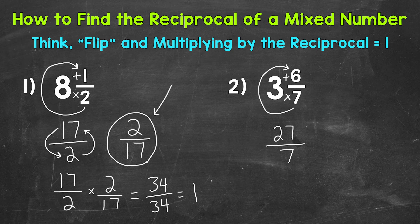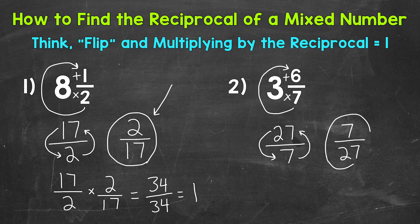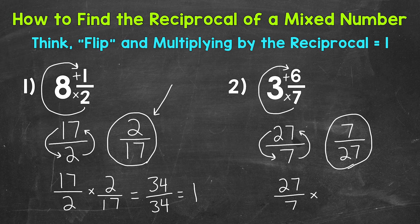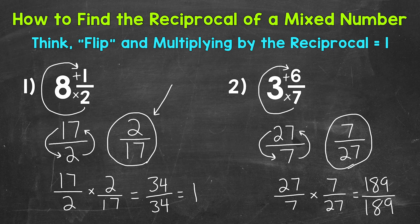Now in order to get the reciprocal, we flip that. The denominator becomes the numerator, and the numerator becomes the denominator. So we get 7 twentysevenths for our reciprocal. Now let's show that when we multiply our original improper fraction, 27 sevenths, by the reciprocal, that we get 1 whole. So 27 over 7 times 7 over 27 — 27 times 7 equals 189, and 7 times 27 equals 189 as well. So we get 189 over 189, which equals 1. That shows that our improper fraction times the reciprocal equals 1.